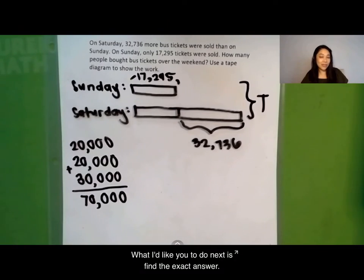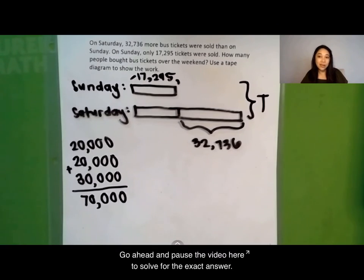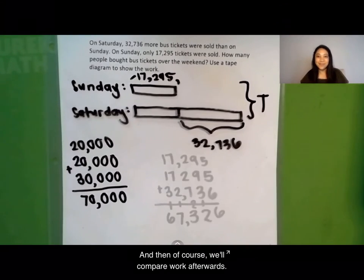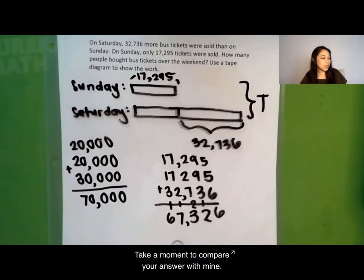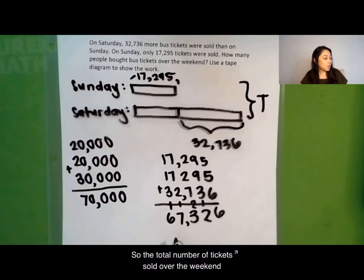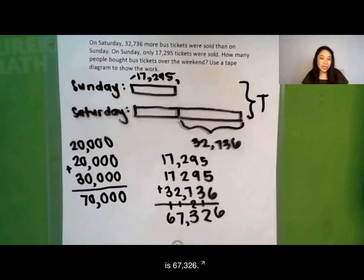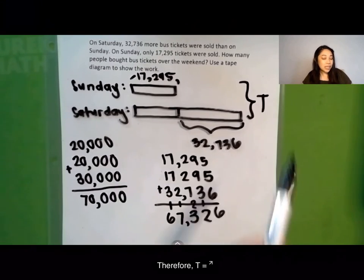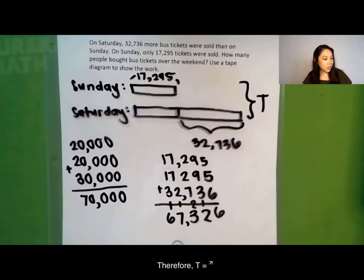What I'd like you to do next is find the exact answer. Go ahead and pause the video here to solve for the exact answer. And then we'll compare our work afterwards. Take a moment to compare your answer with mine. The total number of tickets sold over the weekend is 67,326. Therefore, t equals 67,326.